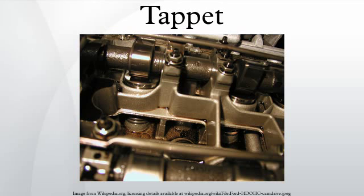A tappet is a projection that imparts a linear motion to some other component within a mechanism. The term is first recorded as part of the valve gear of Thomas Newcomen's atmospheric beam engine, a precursor to the steam engine.